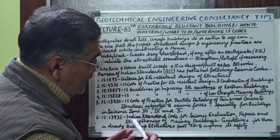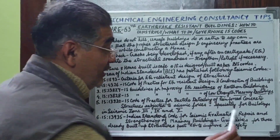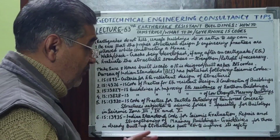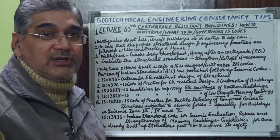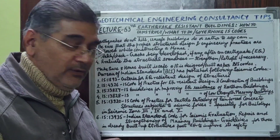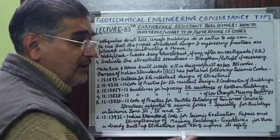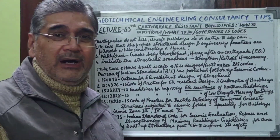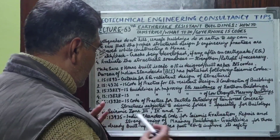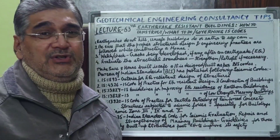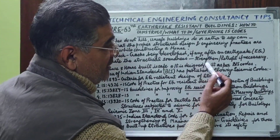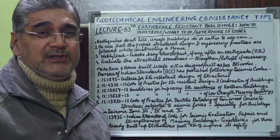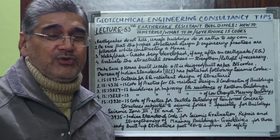Finally, IS 13935 provides Indian Standard guidelines for seismic evaluation, repair, and strengthening of masonry buildings — guidelines for structures which have already been built. If your structure has undergone or faced a major earthquake, you should assess whether any part has become defective or if any cracks have developed. You can consult this code with the help of a structural engineer to determine what kind of strengthening or seismic retrofitting your residence or building may require.